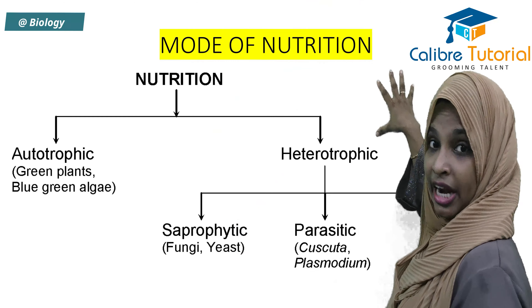So heterotrophic has categories within it. If I talk about saprophytic — saprophytes are organisms that live on dead and decaying matter. For example, crow, vulture, hyena — they depend on dead and decaying matter. When carnivores attack prey, whatever is left over — the scavengers depend on that part. So scavengers can also be termed as saprophytic — like crow, vulture, hyenas, and all.